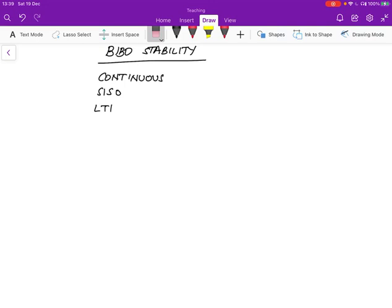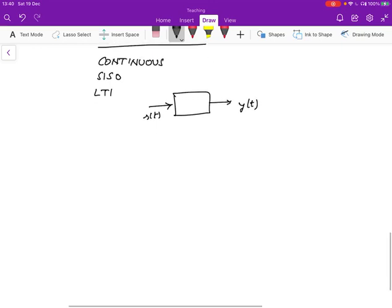So such a system we can draw like this. It has some input, let's call it r of t, that's the reference value. And for now, we'll call it the same as the input, and the output is y of t. And we know that y of t can be written for such a system as this convolution, g tau, r of t minus tau, d tau.